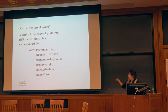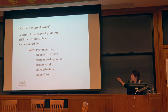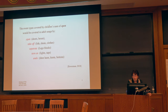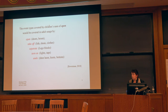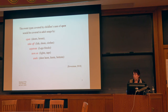In younger children, for instance, you very often find them using 'open' for opening a door, taking the lid off a box, separating two Lego blocks, turning on a light, undoing shoelaces, taking off a coat, and so on. The event types here covered by 'open' would be covered in adult usage by: open for doors and boxes, take off for lids, shoes, and clothes, separate for Lego blocks, turn on for lights and taps, undo for shoelaces, knots, and buttons. So what you see is a whole domain mapped very differently for adults than for children.